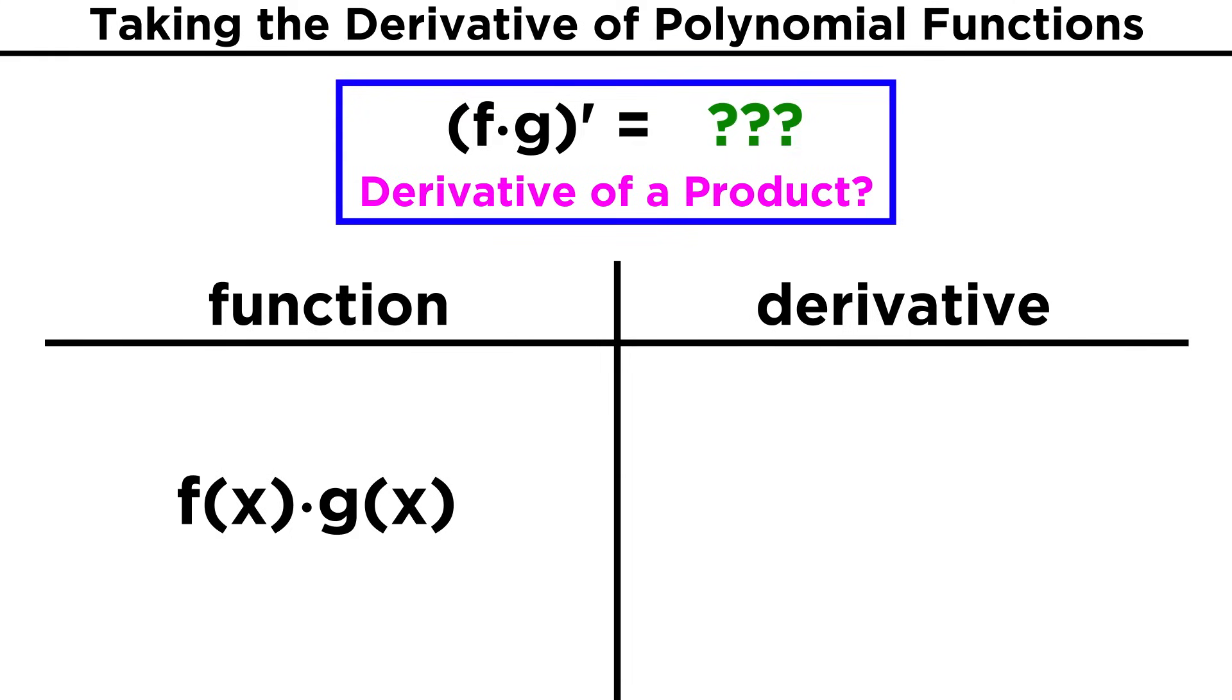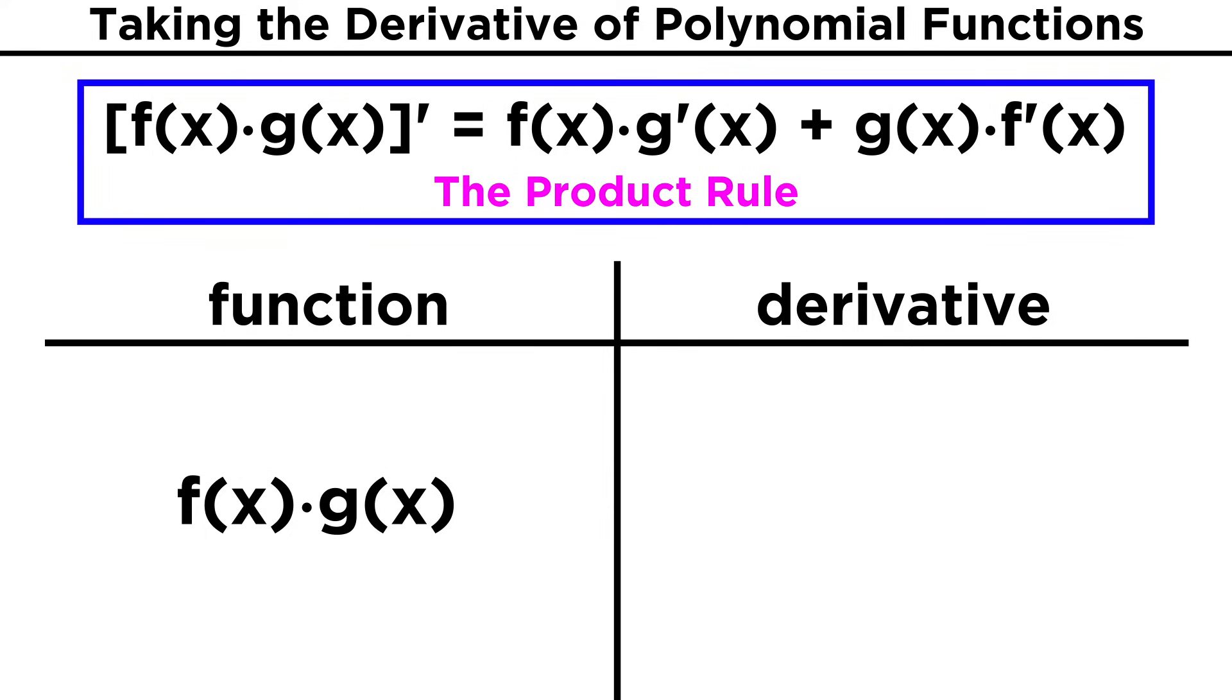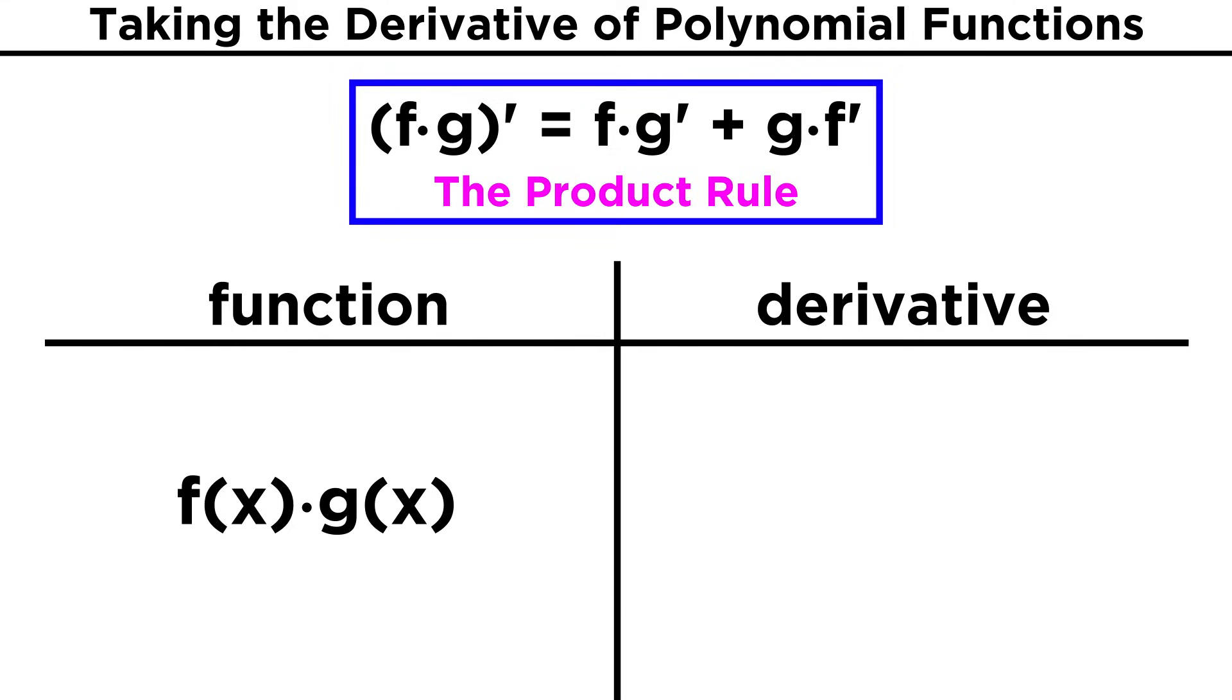Now with the power rule under our belts, let's try something a little trickier. What about the derivative of a product of functions? Unfortunately, this is not as simple as just the product of the two derivatives. In other words, fg quantity prime is not equal to f prime times g prime. Instead, we have to use the product rule. This says that the derivative of f of x times g of x is equal to f of x times g prime of x, plus g of x times f prime of x, or more simply, fg quantity prime equals f g prime plus g f prime.